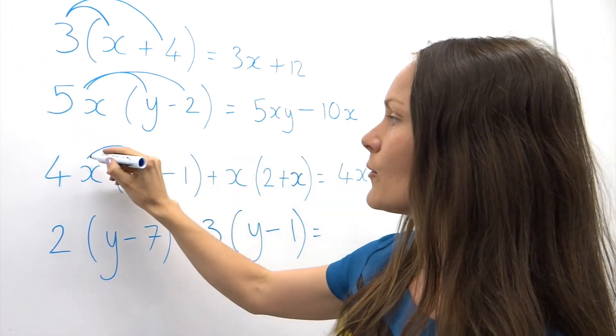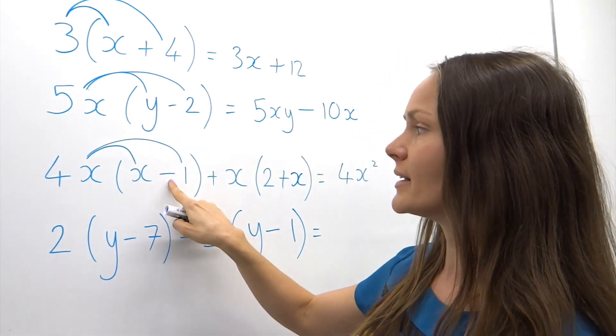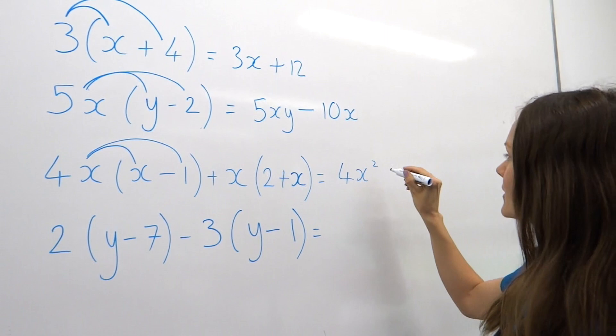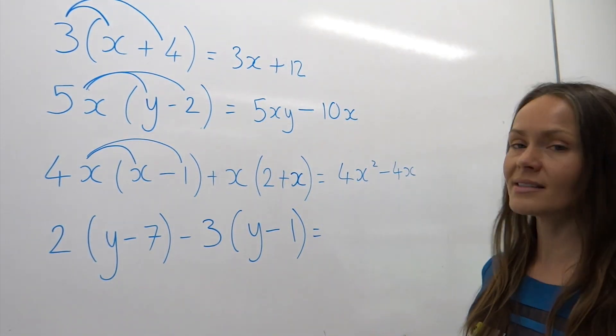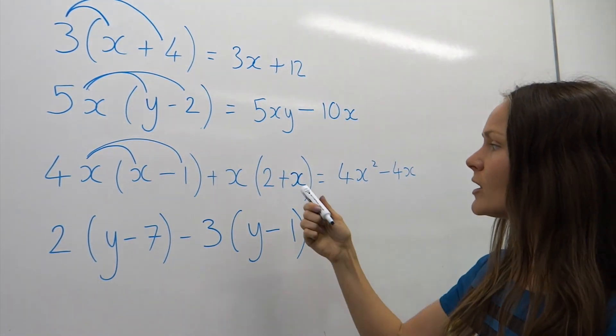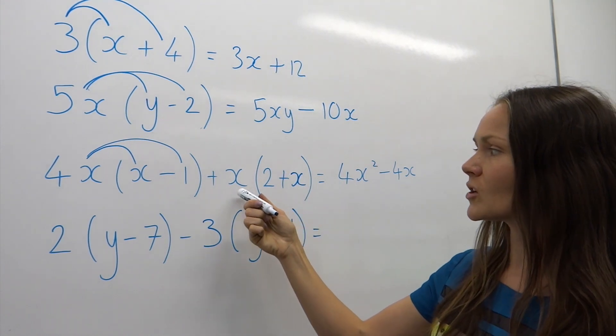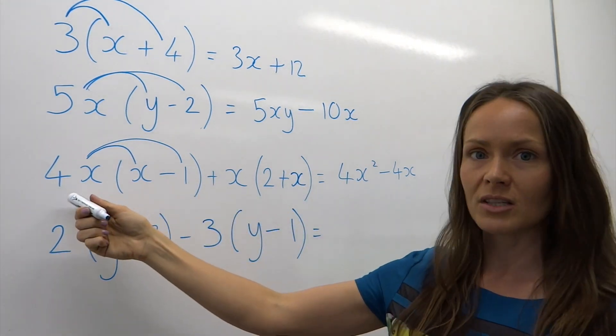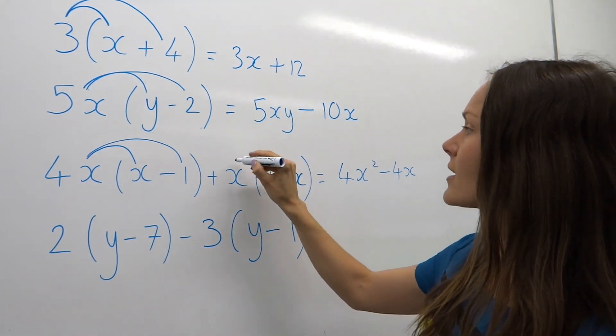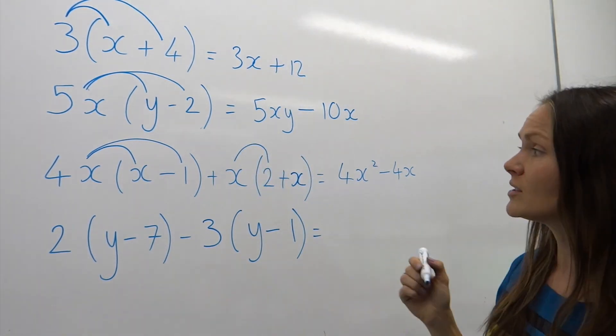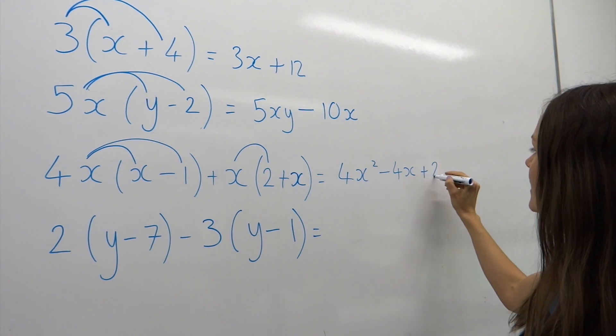And the second step, 4x multiplied by negative 1 is negative 4x. Now onto the second bracket. We're only multiplying this bracket by the term in front, x. It's nothing to do with this one here. So x multiplied by 2 is 2x, and because it's positive I write plus 2x.